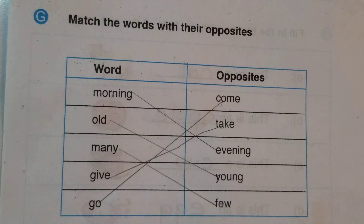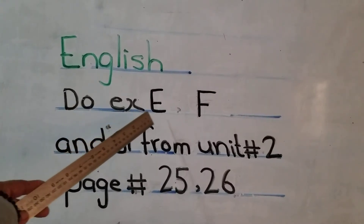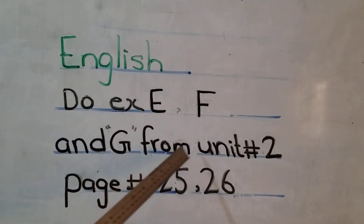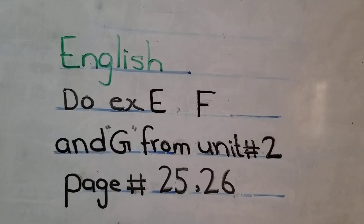Very good. So we have done exercise G from vocabulary unit 2. Children, your home assignment is to do exercises E, F, and G from unit number 2, page number 25 and 26. Thank you. Take care and Allah Hafiz.